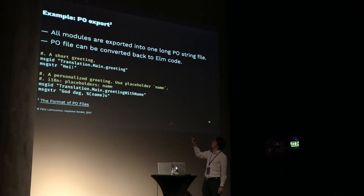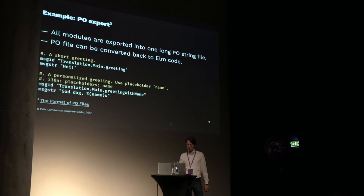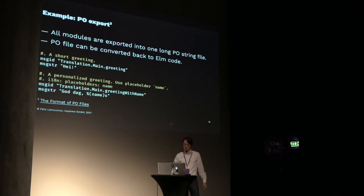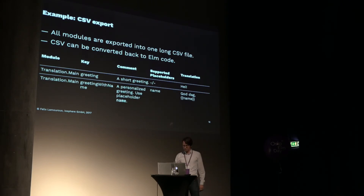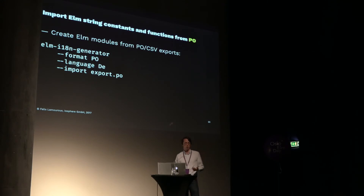The same is true for PO (posturing) files, a format widely used in open source projects. Many online services and apps that help collaboration with translators support importing PO files into their own proprietary systems, so you can use that to exchange translations with translators. Placeholders are represented in PO format as percentage brackets name brackets s, while in CSV we use handlebars. Importing back is very similar — you just say 'import language DE format PO from export.po' and it generates a new set of Elm files you copy over your existing ones.